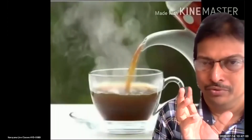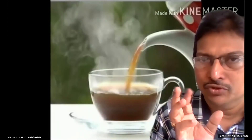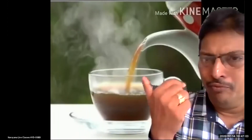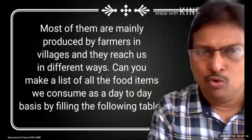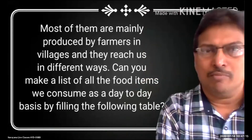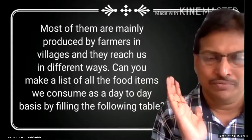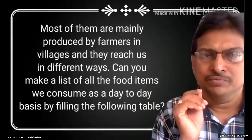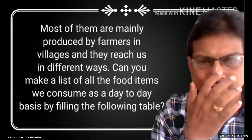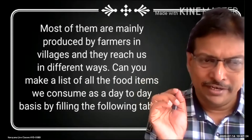Next is sugar. These are all things — from where do we get these things? You can observe vegetables. From where do we get these things? From agriculture. Most of them are mainly produced by farmers in villages and they reach us in different ways.